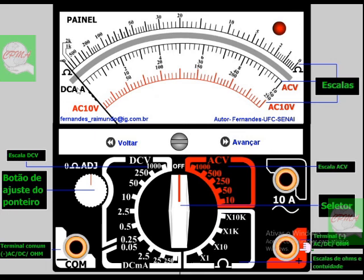Falei também sobre a escala ômica aqui em cima. Esse símbolo aqui, a letra grega Ω, significa OMS, é a simbologia de OMS. Esse 8 deitado aqui no final do ponteiro é a simbologia de infinito, escala infinito.